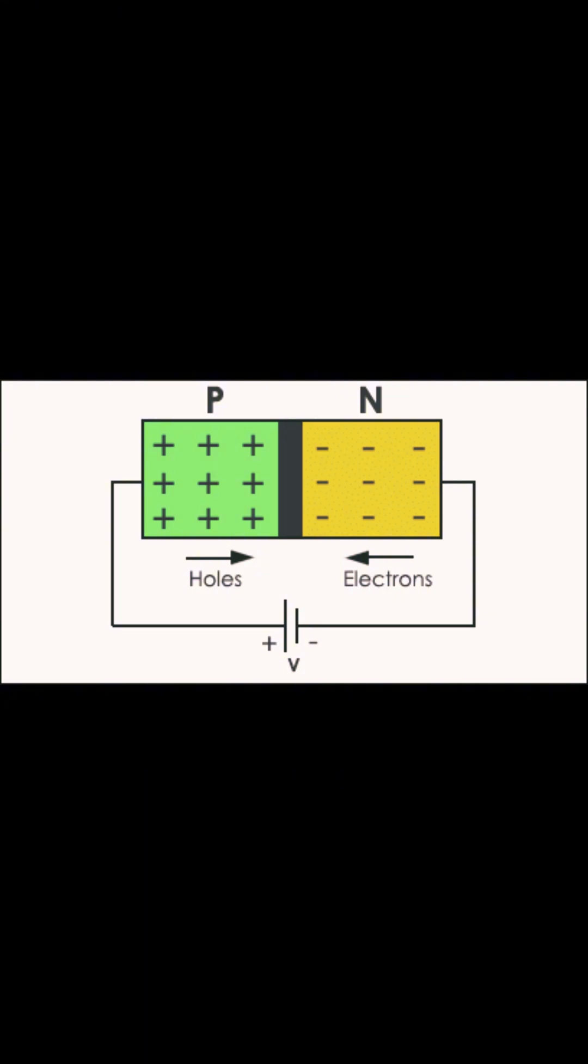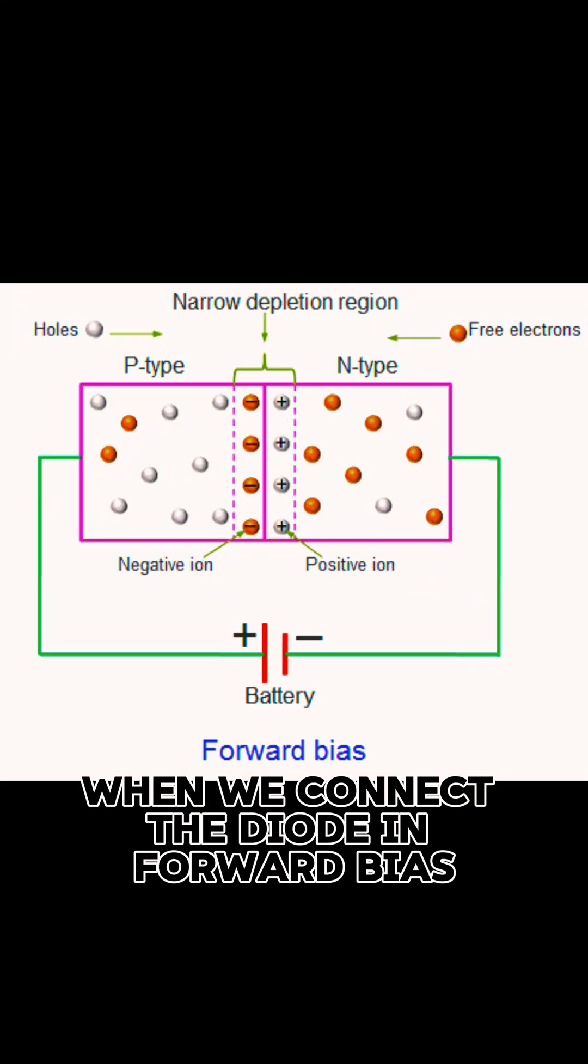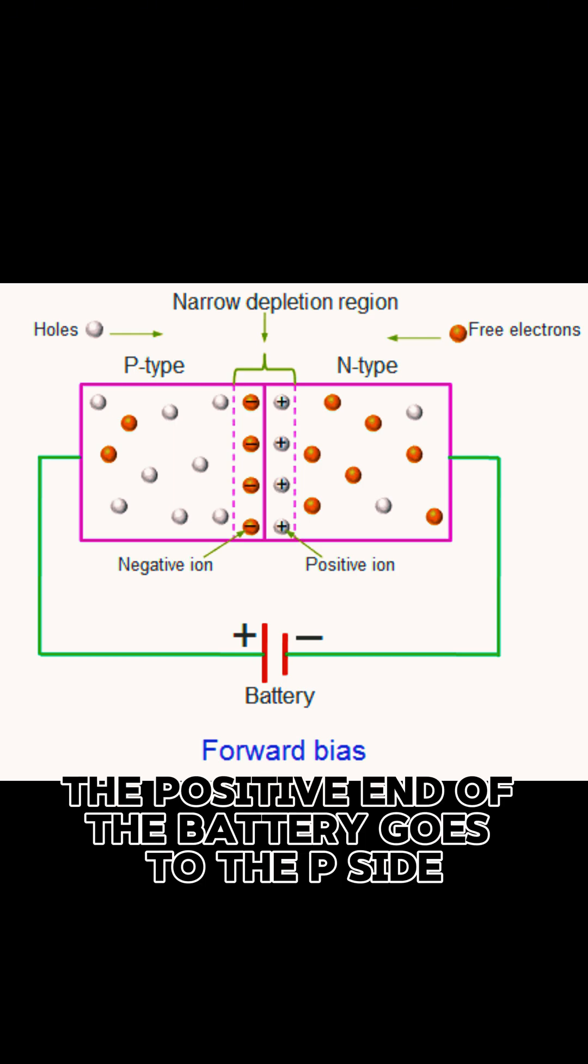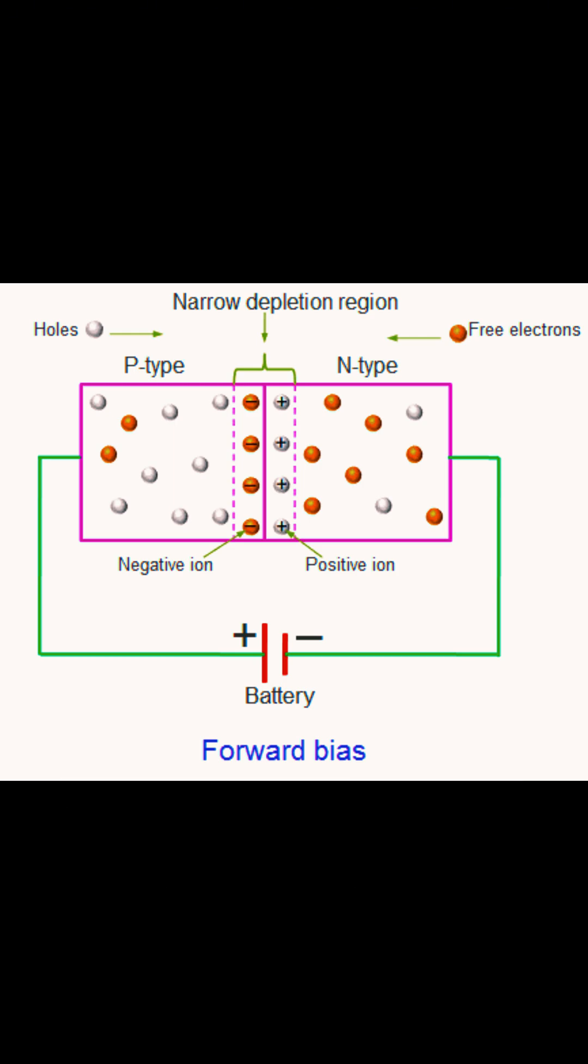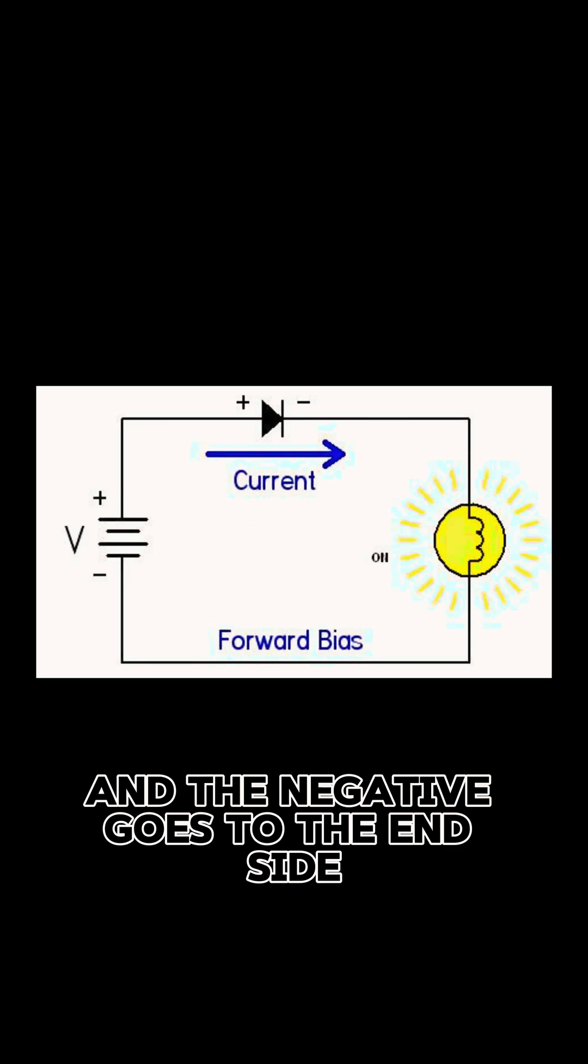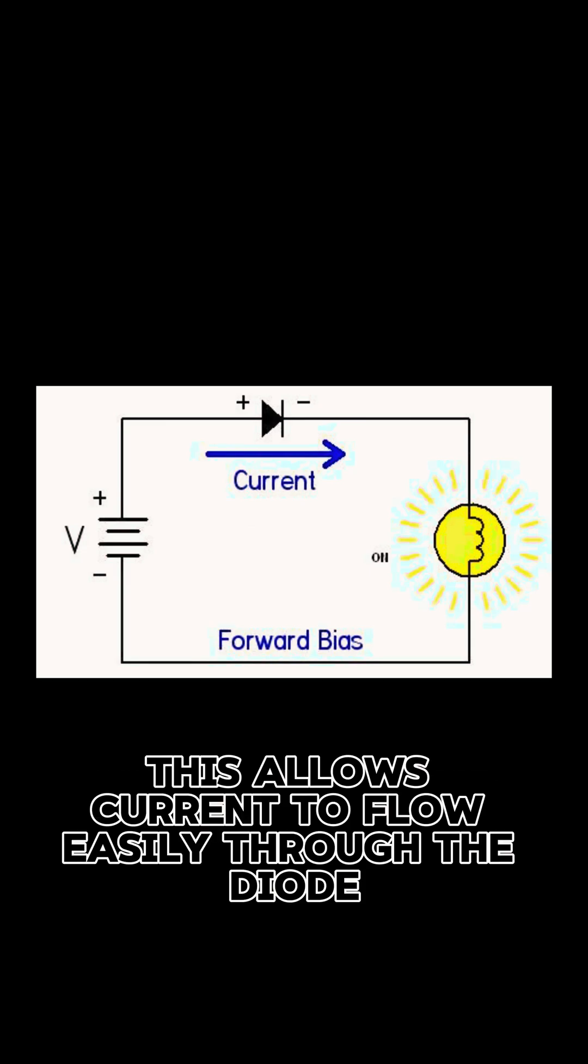When we connect the diode in forward bias, the positive end of the battery goes to the P-side and the negative goes to the N-side. This allows current to flow easily through the diode.